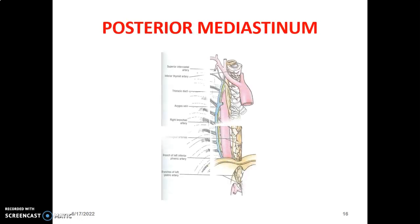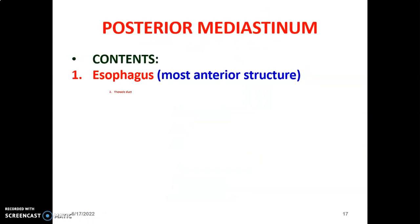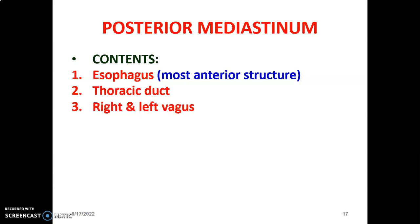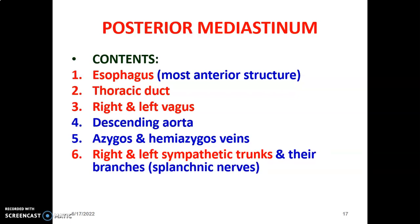The contents of the posterior mediastinum are: thoracic aorta; esophagus with vagal trunks, which is the most anterior structure; thoracic ducts to the right of the esophagus; then right and left vagus forming anterior and posterior trunks around the esophagus; descending aorta; azygous vein on the right and hemiazygous vein on the left; right and left sympathetic trunks, which are paravertebral on both sides; and lymph nodes.